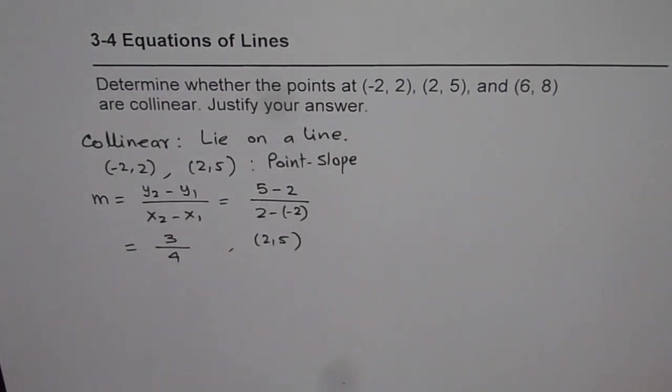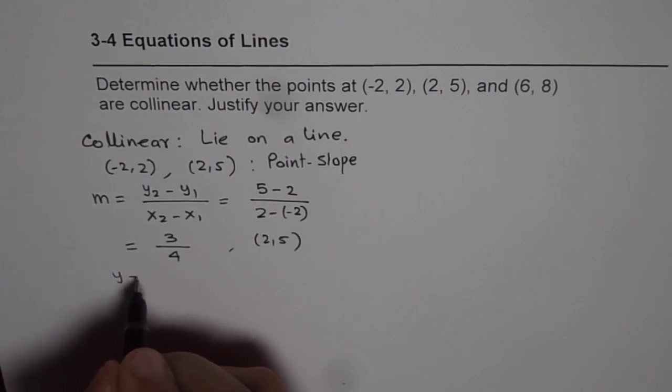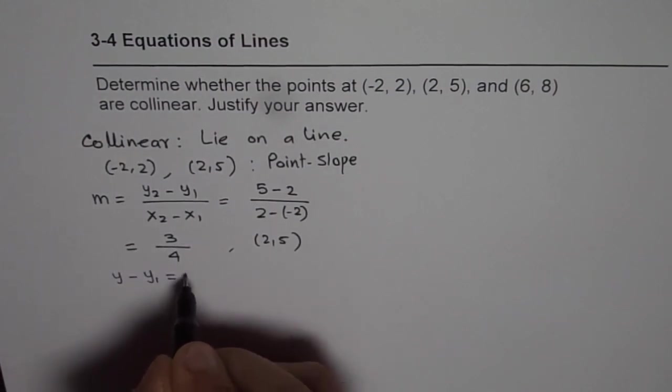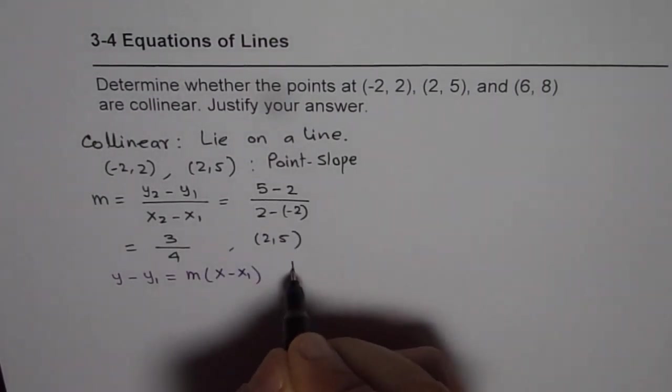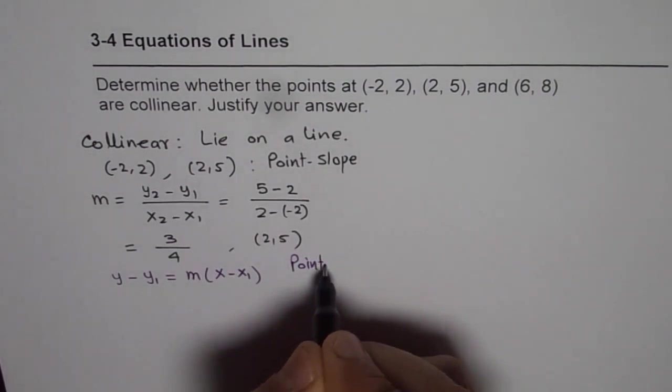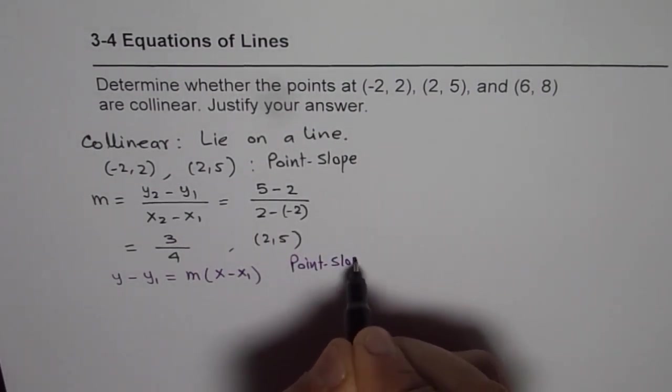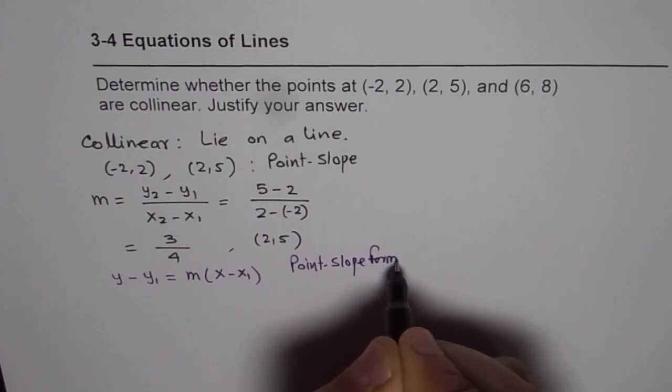In point-slope form, if you remember, the equation is y minus y1 equals m times (x minus x1). That is point-slope form.